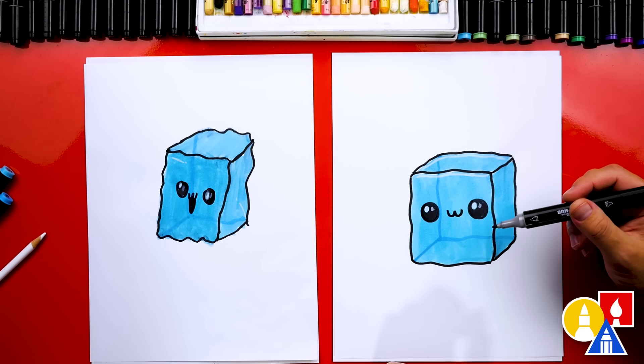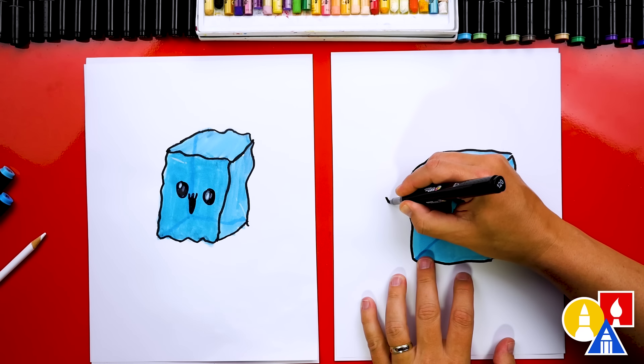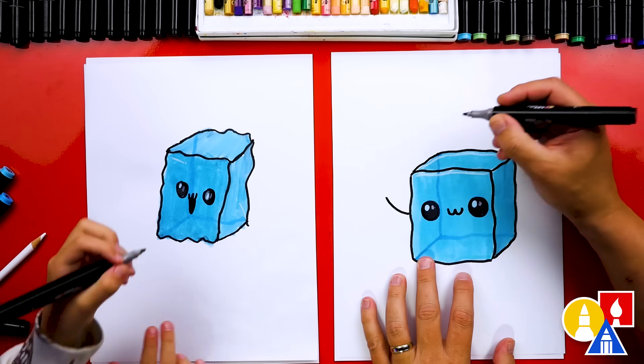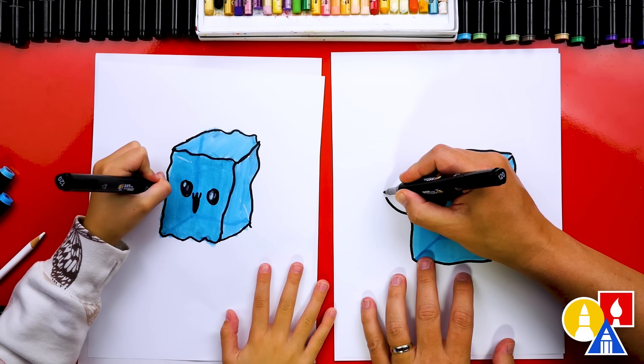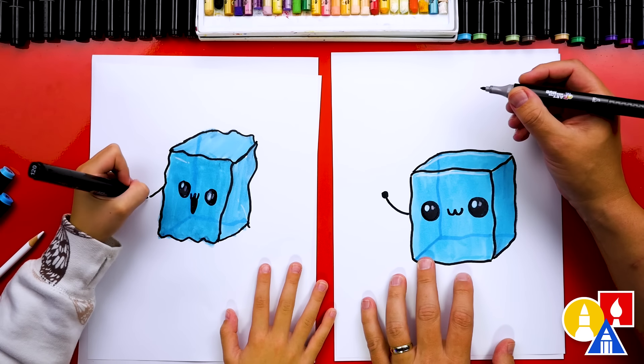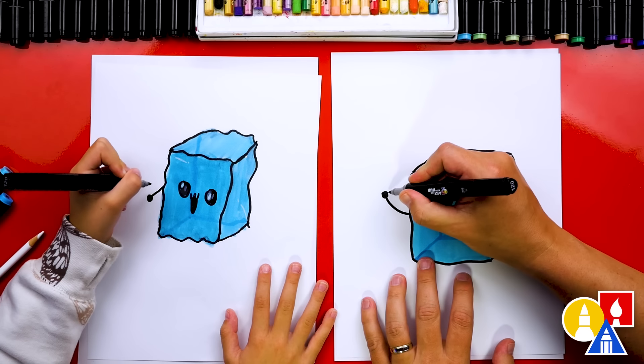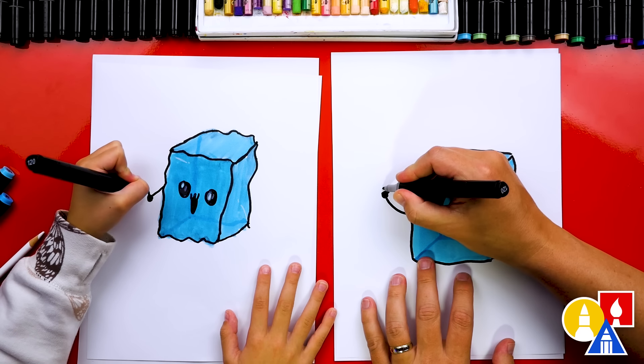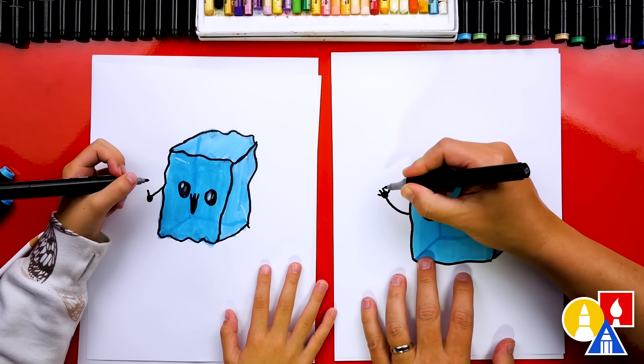Let's add one more thing to our ice cube to make it even funnier. I'm going to add a hand or an arm coming up. Oh, I like yours going down. Then you can add a little circle and color it in. And then you can add a thumb and then three fingers.